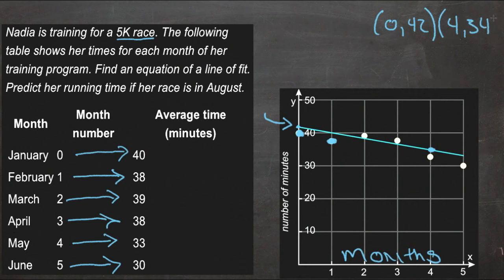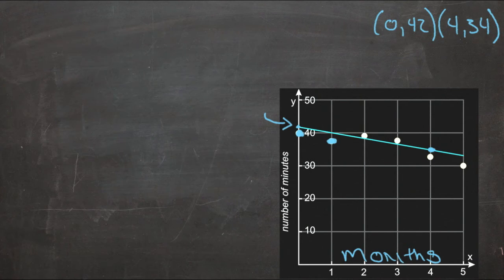So let's use these two points to figure out the actual equation of our line. I'm going to hide this other data over here so that we have a little more room to work. So if our two points are 0, 42, and 4, 34, first thing we need to do is find our slope, m.